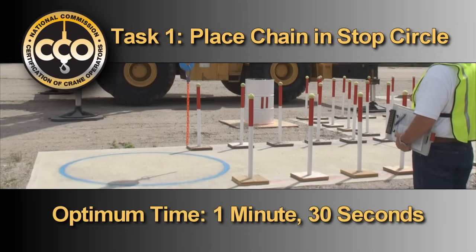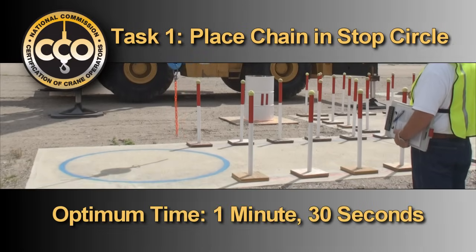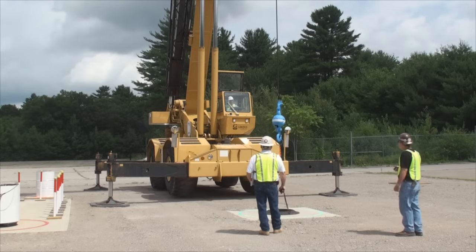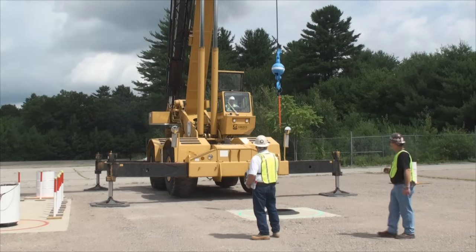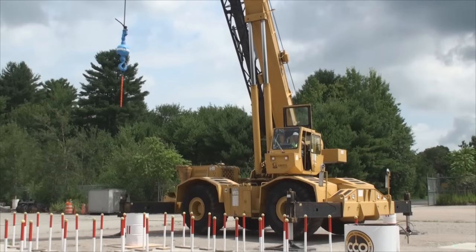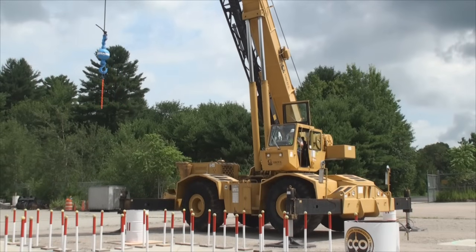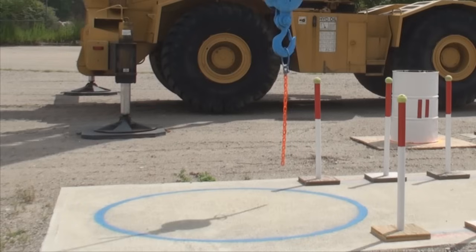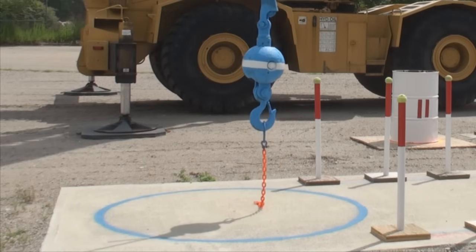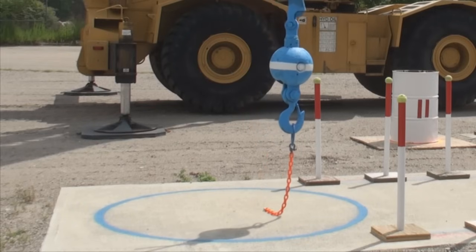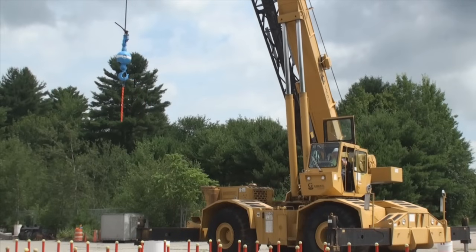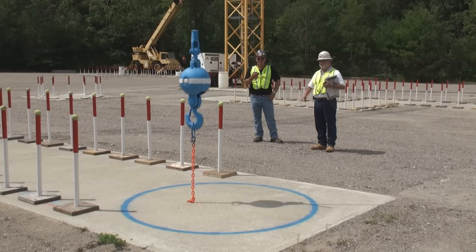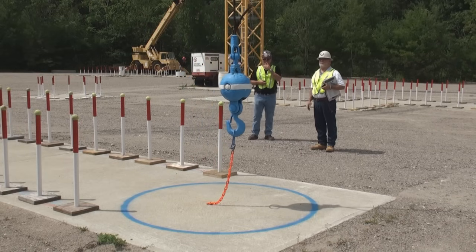The optimum time for this task is 1 minute and 30 seconds. At the examiner's indication to start, at which point timing will begin, raise the chain at least 10 feet off the ground to clear all obstacles and personnel. Bring the chain from its starting position in the start circle over to the stop circle and land the chain fully inside the circle. Once the chain makes contact with the ground inside the circle, do not lift the chain off the ground. Avoid contacting anything but the ground inside the stop circle. Once the chain is under control inside the circle, the examiner will give you a stop signal and timing will end.